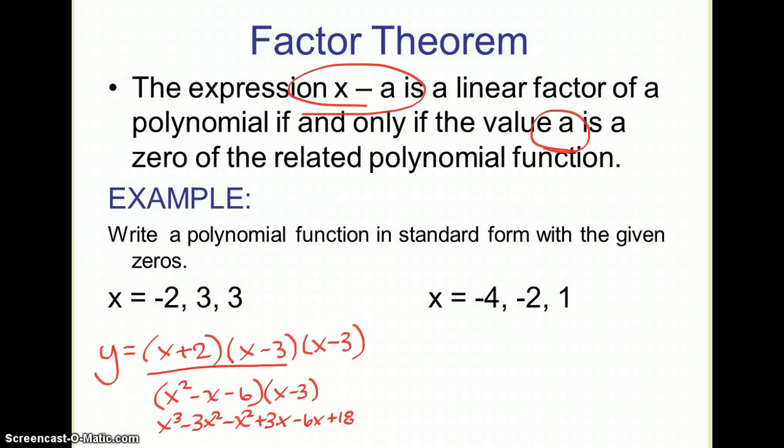Then I'm going to have to combine together all of my like terms and get my final answer. If I do that, I'm going to end up with x cubed minus four x squared minus three x and plus eighteen. So that would be that in standard form.